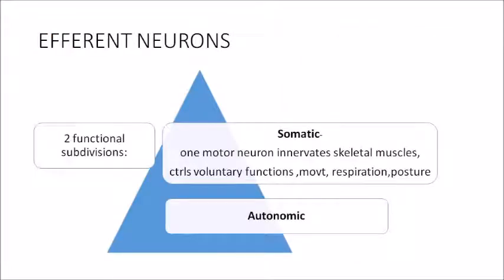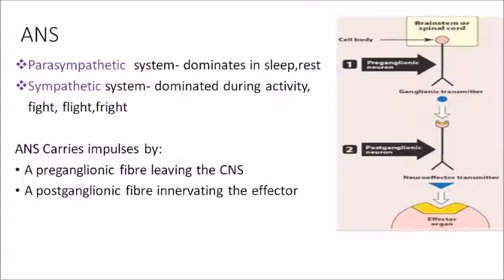The two functional divisions of efferent neurons are somatic and autonomic. The somatic subdivision is concerned with voluntary activities — one neuron innervates skeletal muscles to control voluntary functions like movement, respiration, and posture. The autonomic system controls mostly involuntary activities without our voluntary control. The parasympathetic system dominates during sleep and rest, while the sympathetic system dominates during activity — flight, fight, and fright responses stimulate our sympathetic system.